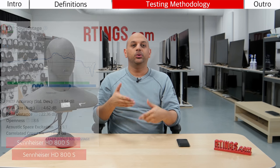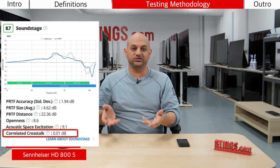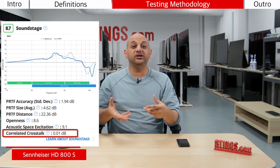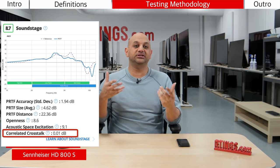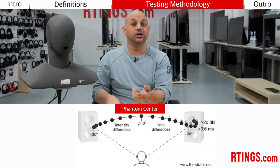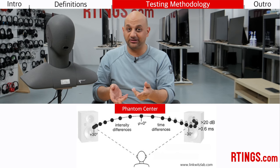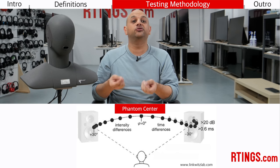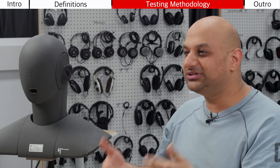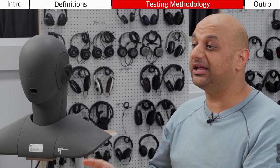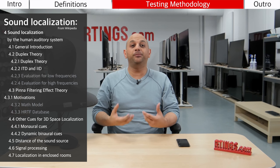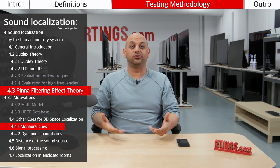For the soundstage portion, we calculate the amount of correlated crosstalk of a headphone. In a stereo speaker setup, the role of crosstalk is to strengthen the phantom center and to make the stereo image more cohesive — in other words, to remove the hole in the middle of the stereo image which is characteristic of headphone soundstage. That's why we only calculate correlated crosstalk between the left and right channels, since uncorrelated crosstalk, which does exist to some extent in open-back headphones, doesn't really affect the phantom center and stereo cohesion.